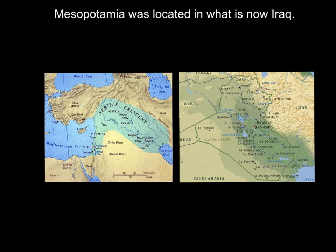Today, Mesopotamia is located in what we now call the modern day country of Iraq. Here is the Fertile Crescent that we're talking about — Mesopotamia — and this is the modern day country of Iraq. Iraq has been in our recent history because we've fought a couple of wars there recently.